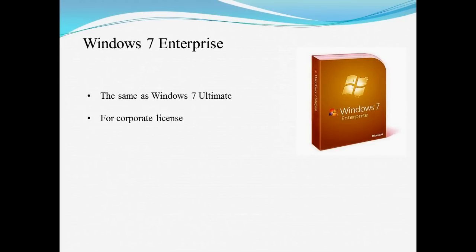The final version is Windows 7 Enterprise. This is the same as Windows 7 Ultimate but it has the capability of having a corporate license. A corporate license is a single activation key that is able to be used on a set amount of computers, which has been agreed with Windows.